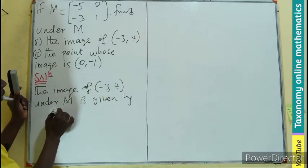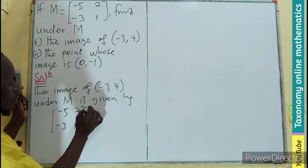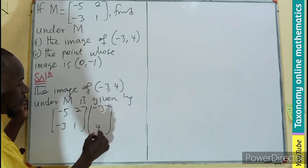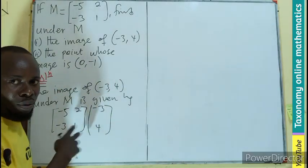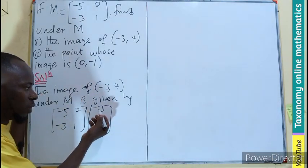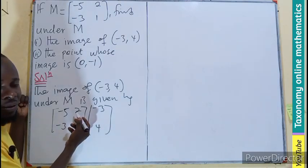So the image equals -5, -3, 2, 1 multiply by -3 and 4. This is multiplication of 2 by 2 by 2 by 1. We know this: multiply this, plus this, times this. So directly,